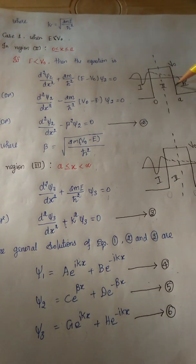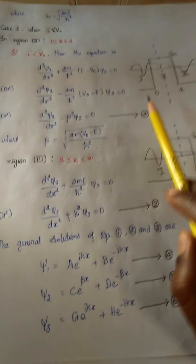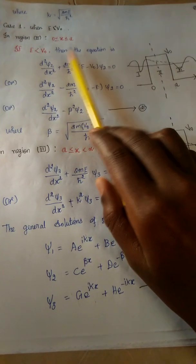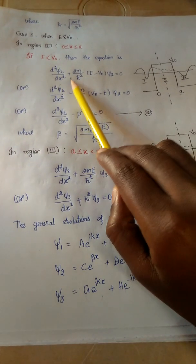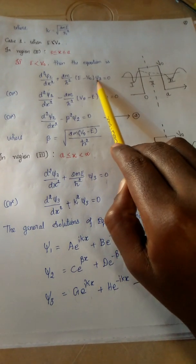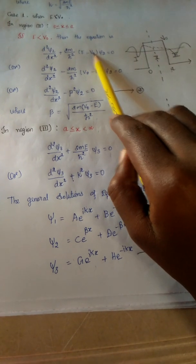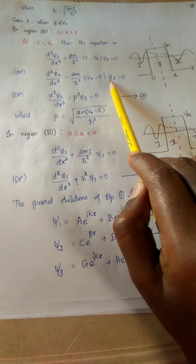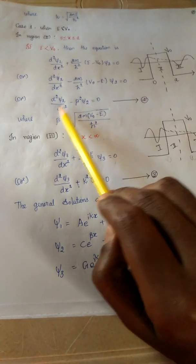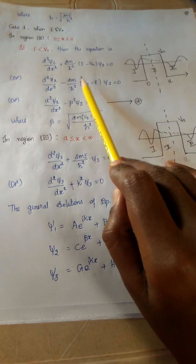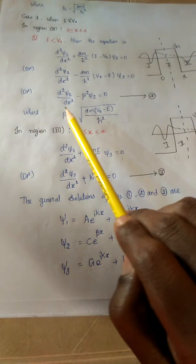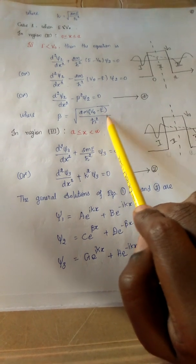For region 2, where 0 ≤ x ≤ A, if E < V₀, the equation is d²ψ₂/dx² + (2M/ℏ²)(E − V₀)ψ₂ = 0. Rearranging with sign interchange gives d²ψ₂/dx² − β²ψ₂ = 0, which is equation 2, where β = √(2M(V₀ − E)/ℏ²).